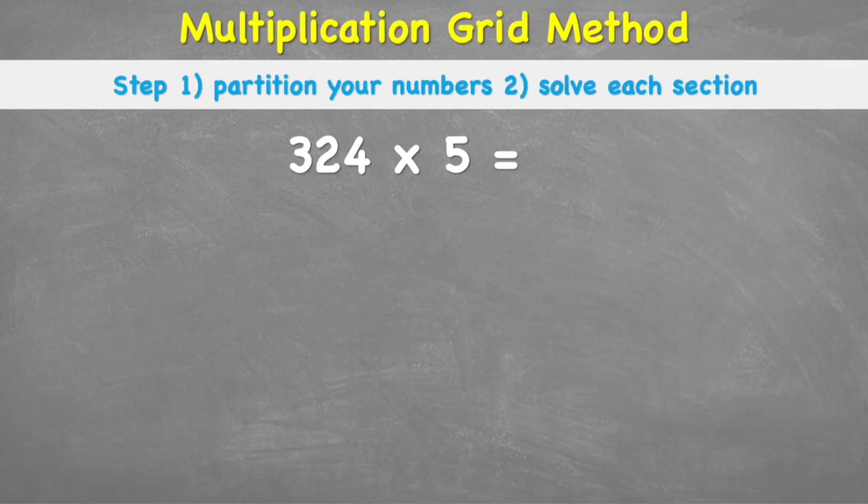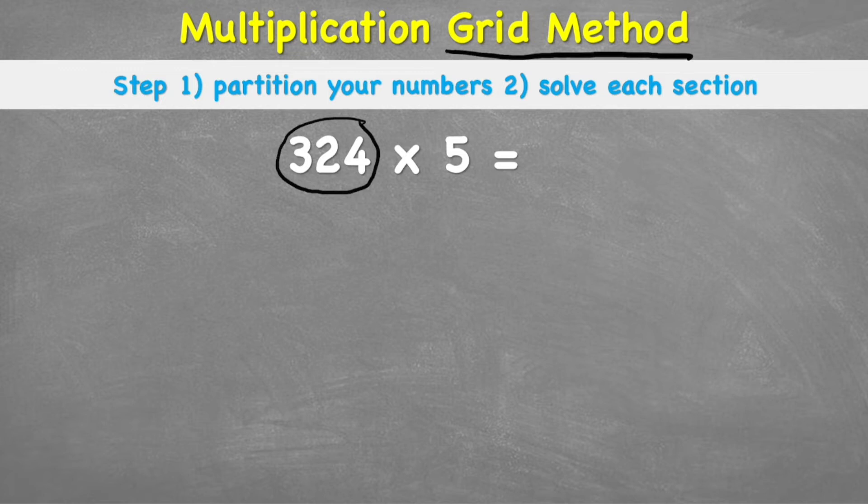So the steps that we're going to put in place when using grid method is to partition our numbers and then solve each section. But what does that mean? And what even is grid method? Well, grid method is a nice way of breaking up big numbers into more manageable chunks so that we can do big multiplications like our example here, 324 times 5.